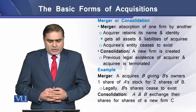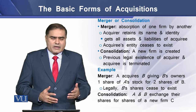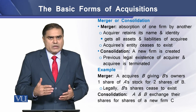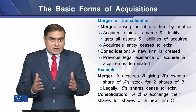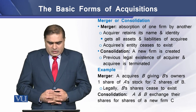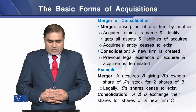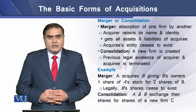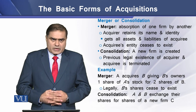In consolidation, the legal existence of the acquirer and the acquiree both cease to exist — it is terminated. An example of merger: A acquires B, giving B's owners one share of A's stock for two shares of B.